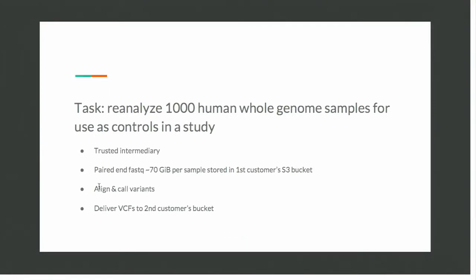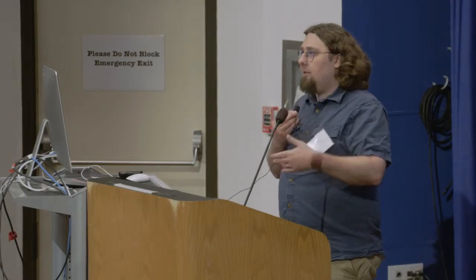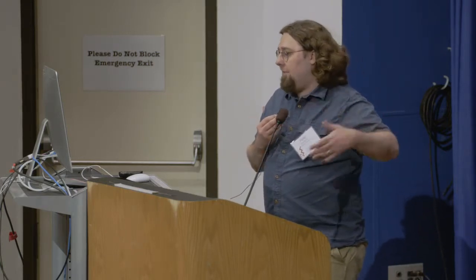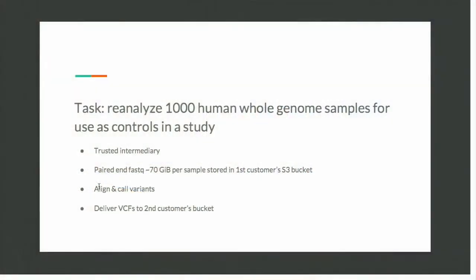So what's the task? The title of the talk is '1,000 Genomes in a Week.' We wanted to reanalyze 1,000 whole human genomes for study controls. We had two customers — one customer had the data, another customer wanted the data, and we acted as a trusted intermediary doing that analysis. The customer receiving the data didn't have access to the original BAM files — they only got the final VCFs. These are whole genome 30x coverage samples, 70 gigabytes per sample, 1,000 of them — a lot of data. We aligned and called them and delivered VCFs.